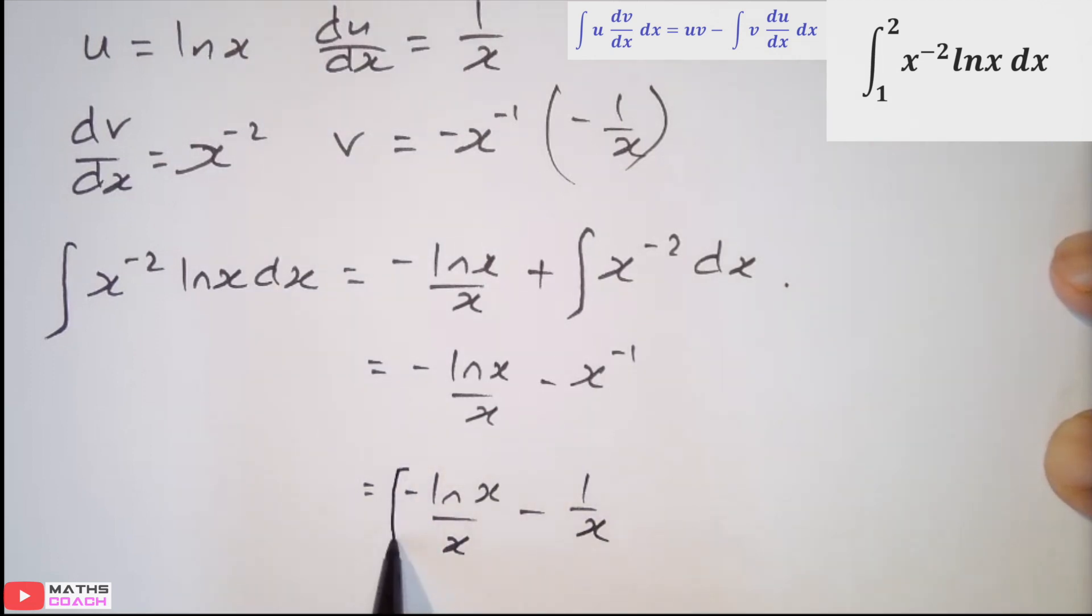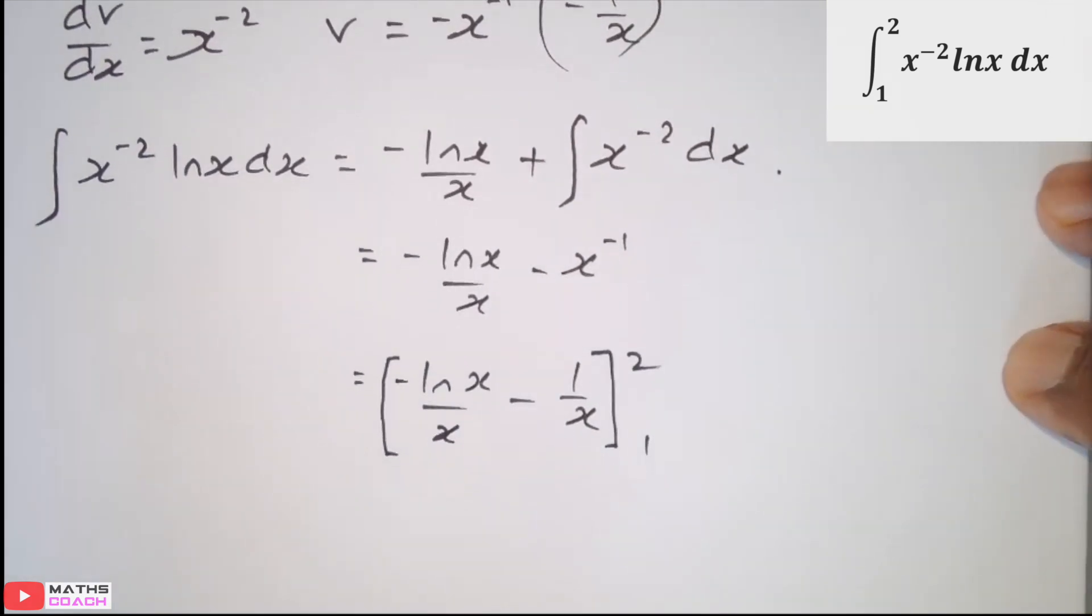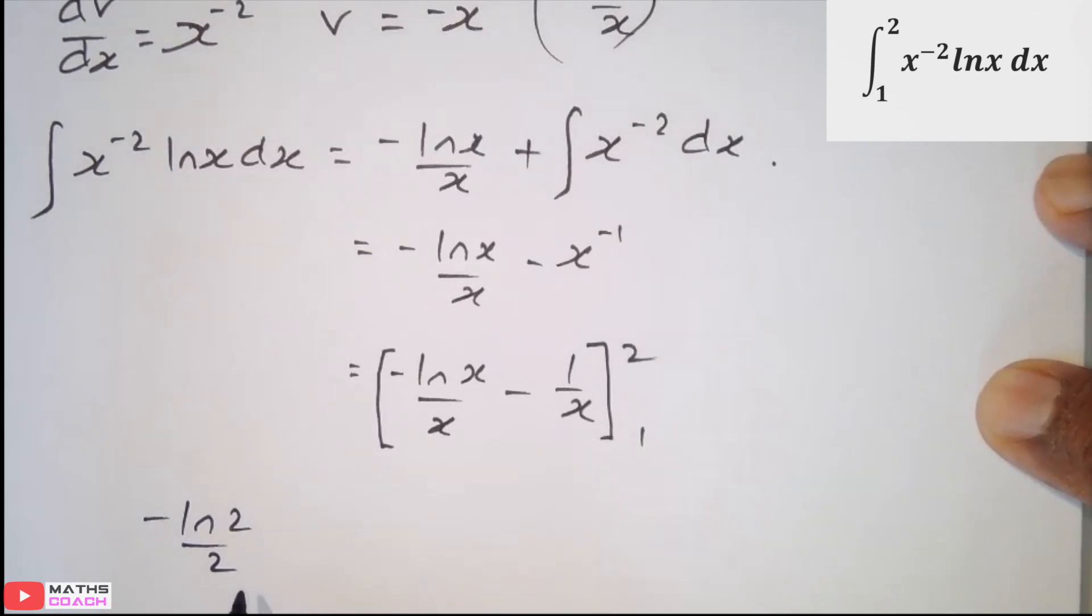We get negative ln x over x minus 1 over x. And we put that in our brackets. And that is now ready to input our 2 and 1. Start with the upper limit of 2. We get negative ln 2 over 2. You could write that as negative half ln 2. The format is not really important. Minus 1 over 2.